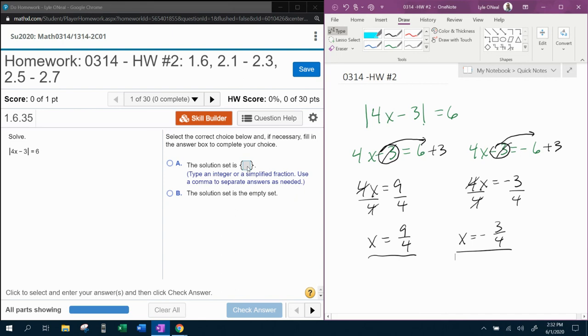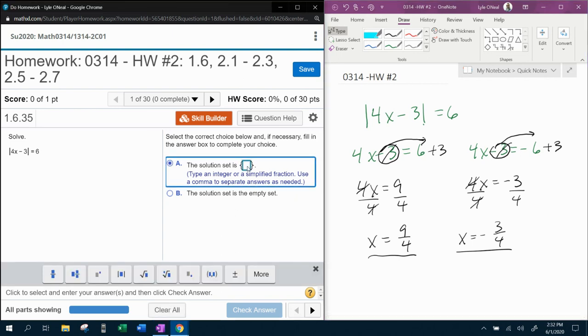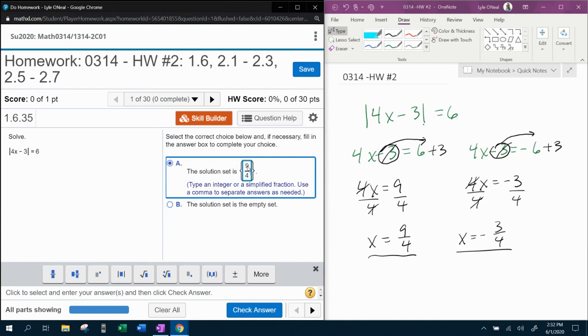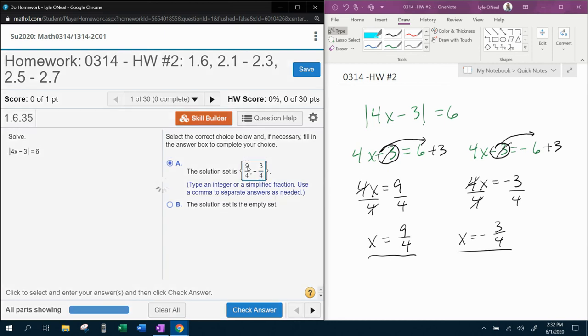And we're going to plug those into MyLabMath just to check. Here we go. So nine over four should be a solution. And we're going to put a comma to separate the other answer. Negative three fourths. Those should both be valid solutions. And they are.